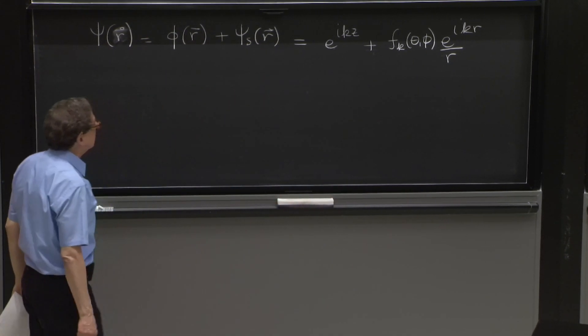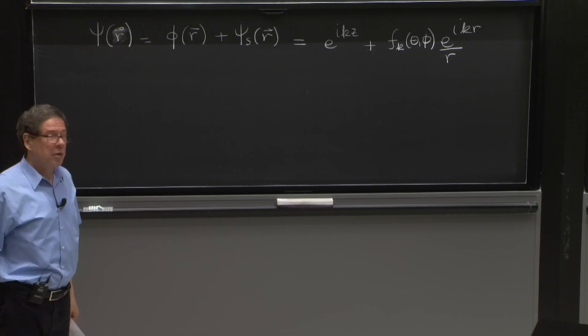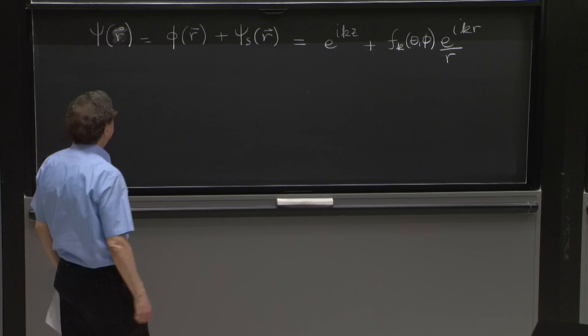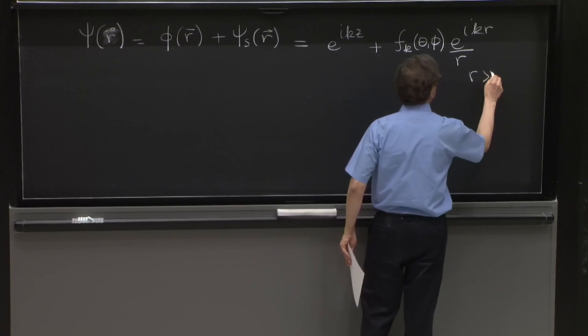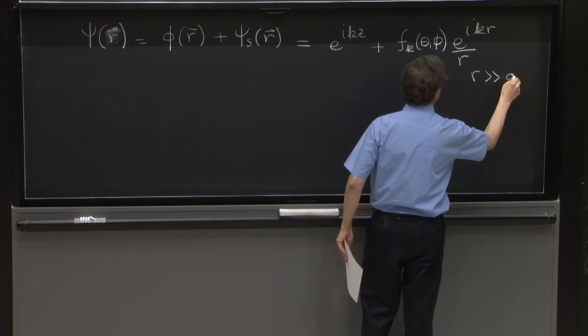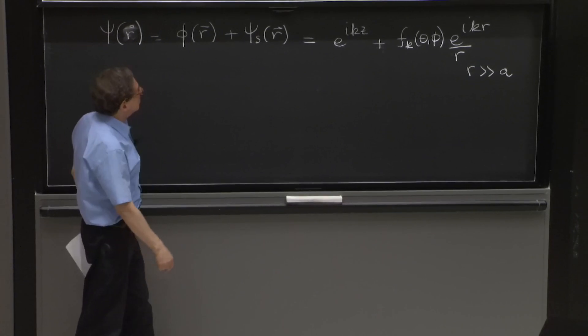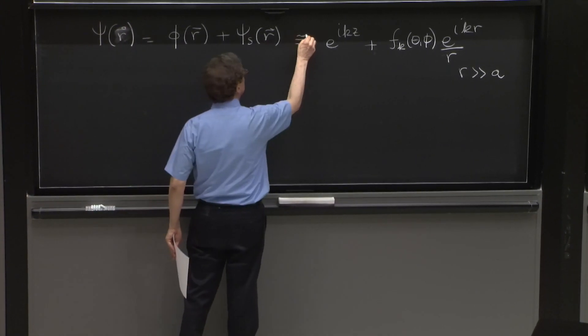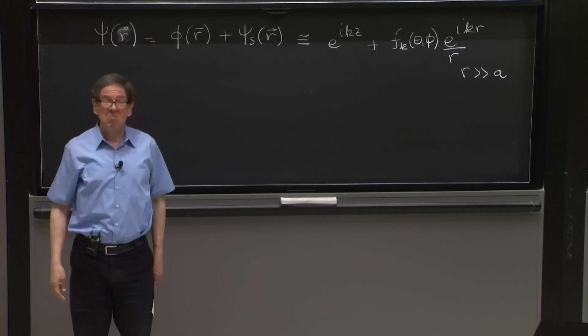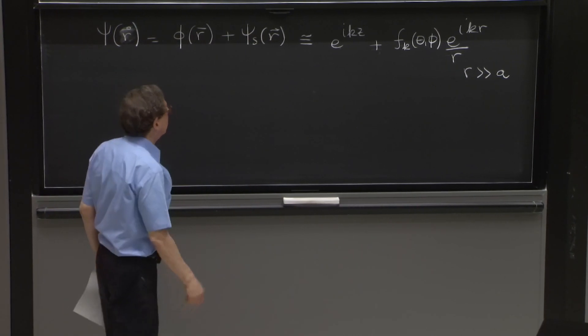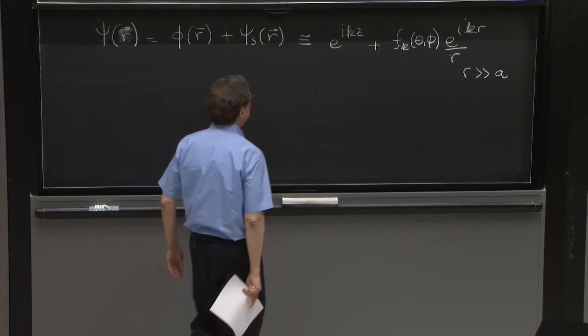And this solution is, as written, not an exact solution of the Schrodinger equation. But it's approximately exact for R much greater than A, where A is the range of your potential. So this is only valid in those cases. It's not valid near the scattering for R near 0.